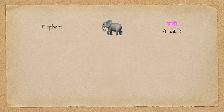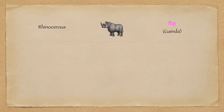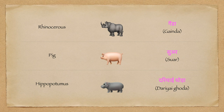Elephant in Hindi is called Haathi. Horse — Ghoda. Camel — Oont. Rhinoceros in Hindi is Ganda. Pig is Suwar. And hippopotamus is Dariai Ghoda.